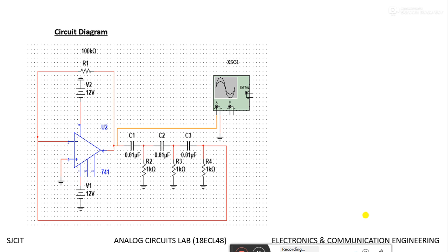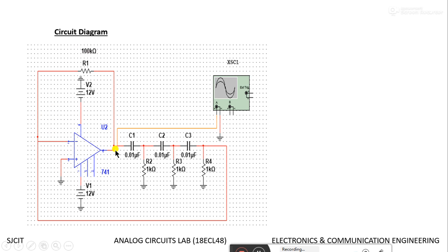The circuit uses op-amp 741, which is an 8-pin IC. Pin 2 and pin 3 are the input pins — pin 2 is the inverting input and pin 3 is the non-inverting input. Pin 6 is the output. Pin 7 is given plus 12 volts and pin 4 is given minus 12 volts. The feedback resistor RF of 100 kilo ohms is connected across terminals 2 to 6.